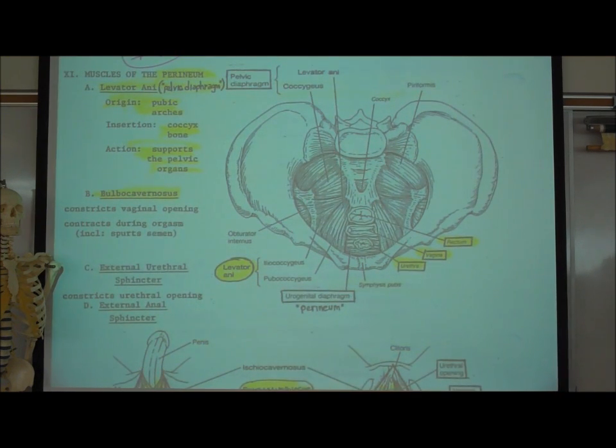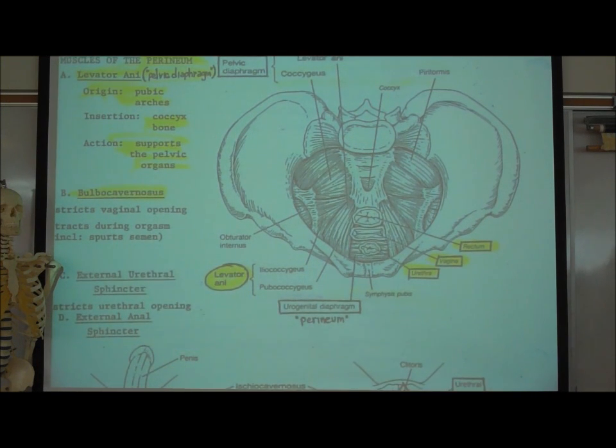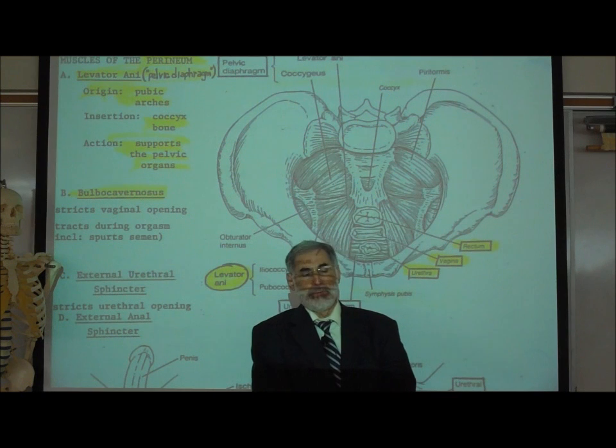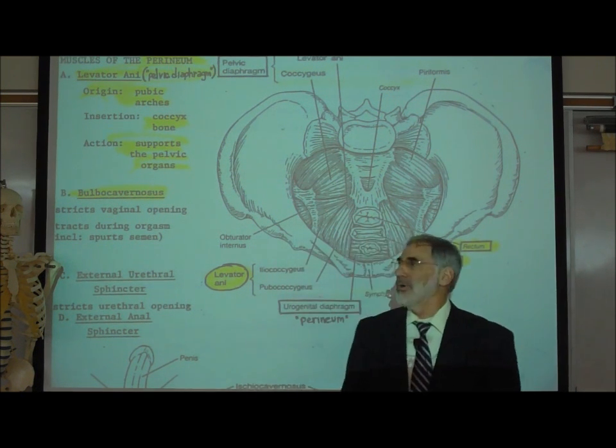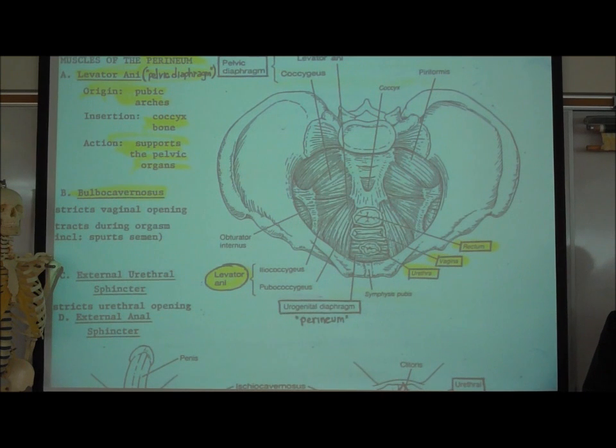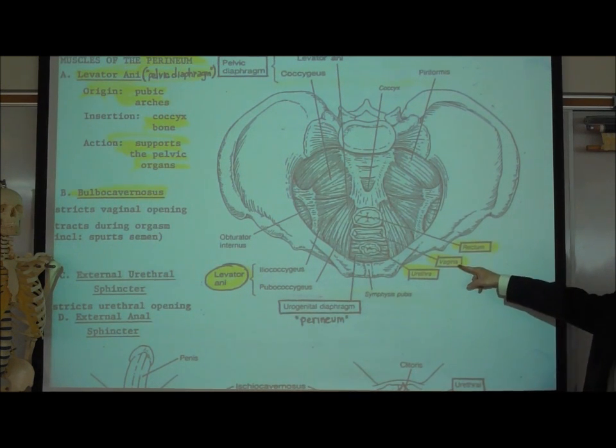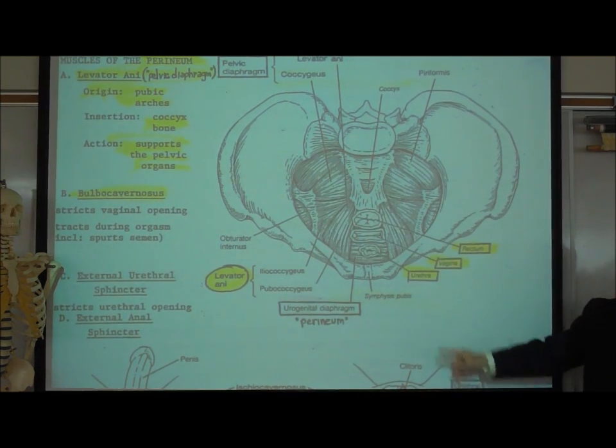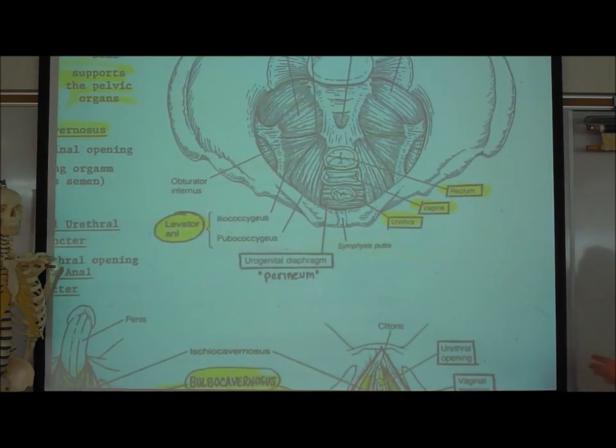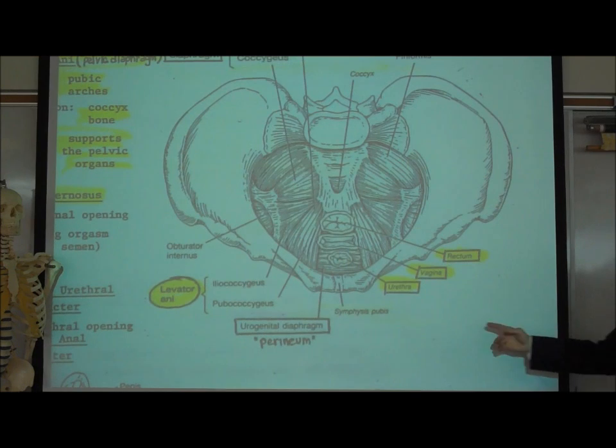Female. All right, now we know that the easiest way to tell whether it's a male or female pelvis is the angle of the pubic arch. We can't see that in this picture. But we still know it's a female because it says there's a vagina here. It's always good to look at labels. Sometimes people say, I don't know, I'm really confused. I can't tell if it's a male. It says vagina.